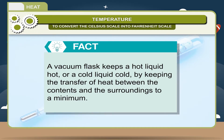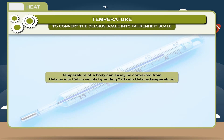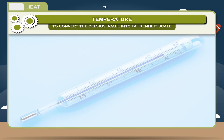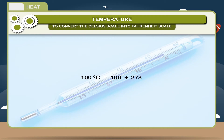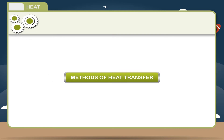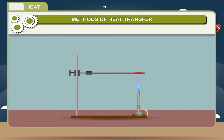Temperature of a body can be easily converted from Celsius to Kelvin simply by adding 273 to the Celsius temperature. Example: 100 degree Celsius is equal to 100 + 273 = 373 Kelvin.